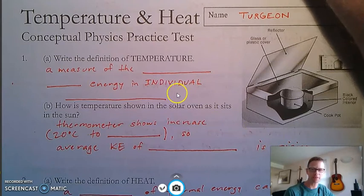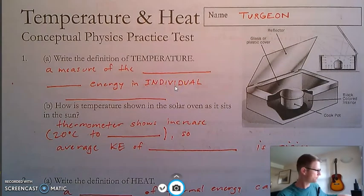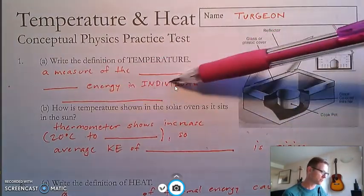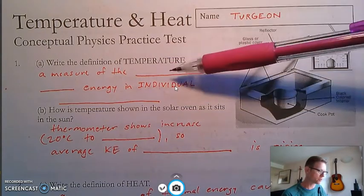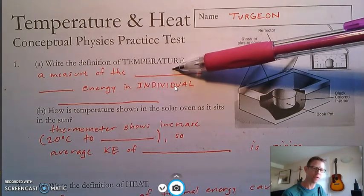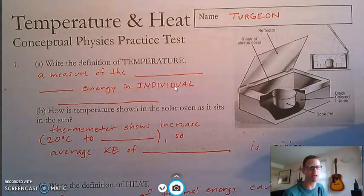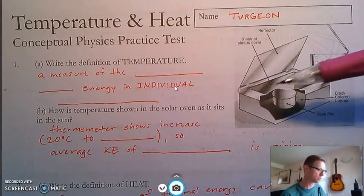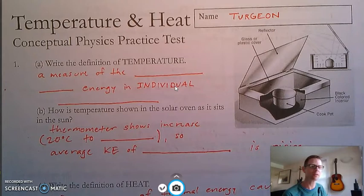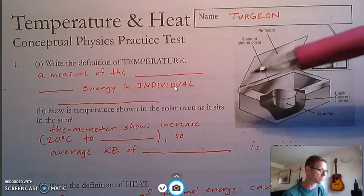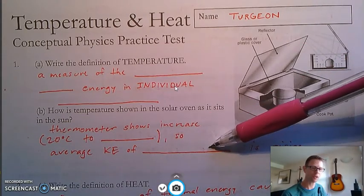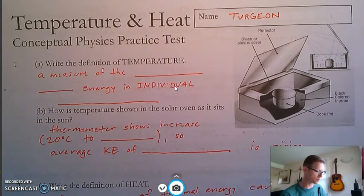We've practiced a lot with the definitions. So temperature is a measure of the average kinetic energy of individual molecules. Temperature is a measure of the average kinetic energy of individual molecules. And we've said that a lot. But the solar oven, the temperature increase because the thermometer probably went from about 20 degrees Celsius up to like 30 or 40 degrees Celsius when we really get them cranking. That means the average kinetic energy of molecules is rising. Notice the repetition of the word molecules over and over.